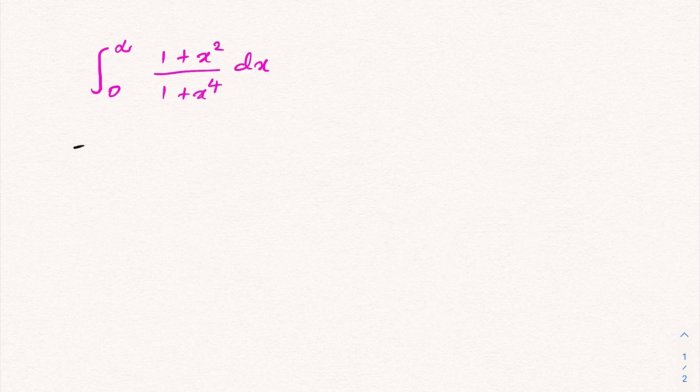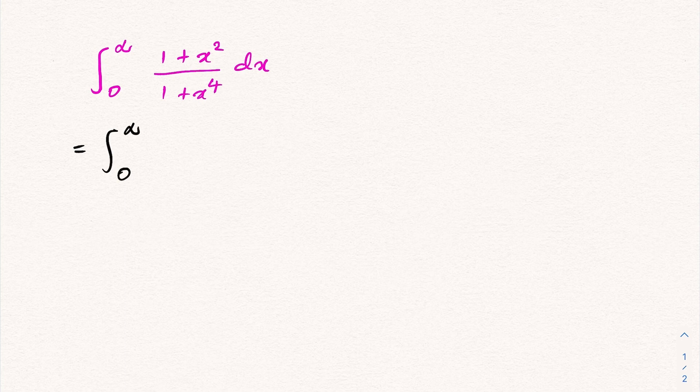First, I'm going to divide both numerator and denominator by x square, so we have 1 plus 1 over x square over x square plus 1 over x square dx.